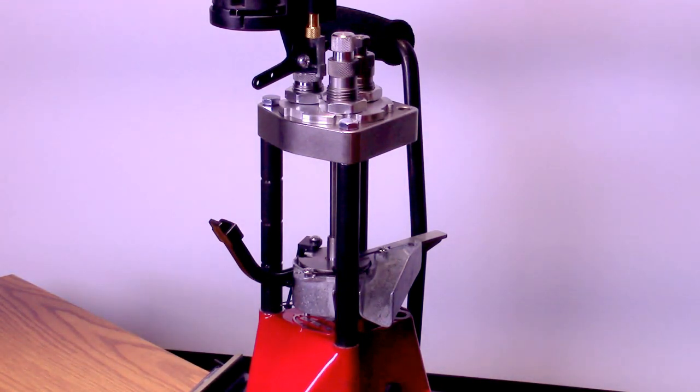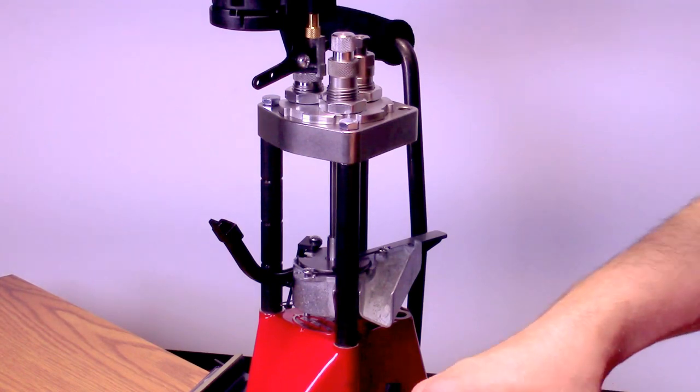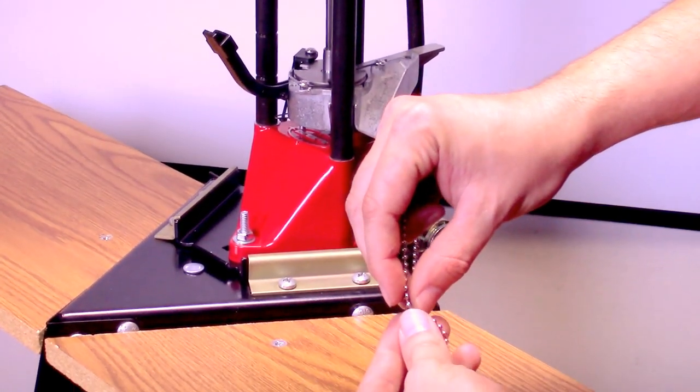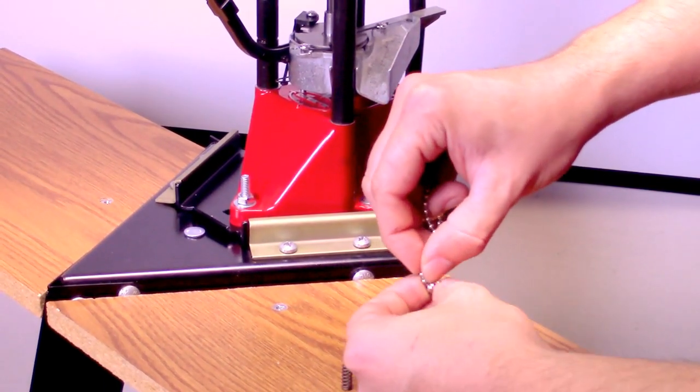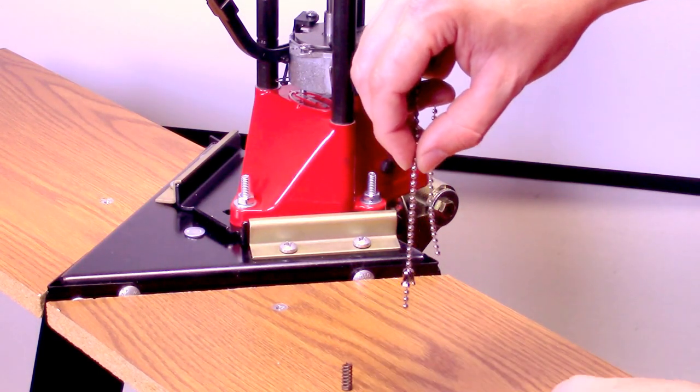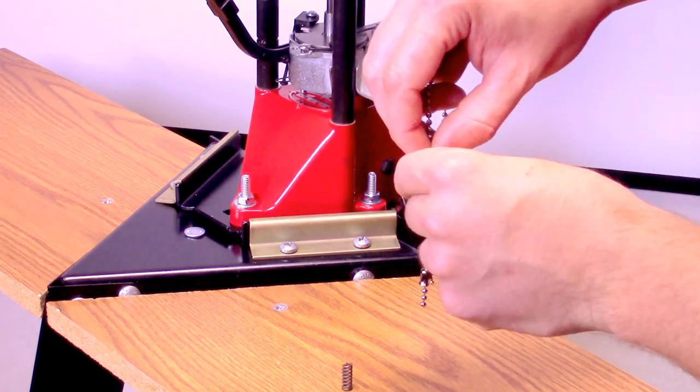Place the pendant about five beads from the end of the chain. Place the buffer spring on top of the pendant.